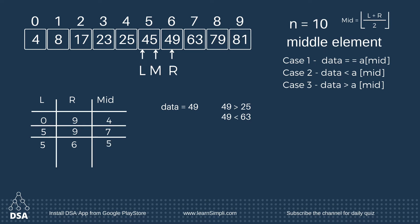Now check if 49 is the same as the mid value — no, it is greater than mid. So it is present to the right of the array. L becomes mid plus 1, that is 6. Move L here. Find the middle value: 6 plus 6 divided by 2 equals 6.